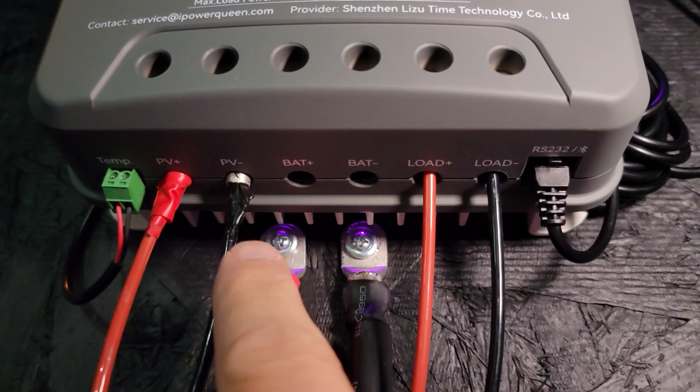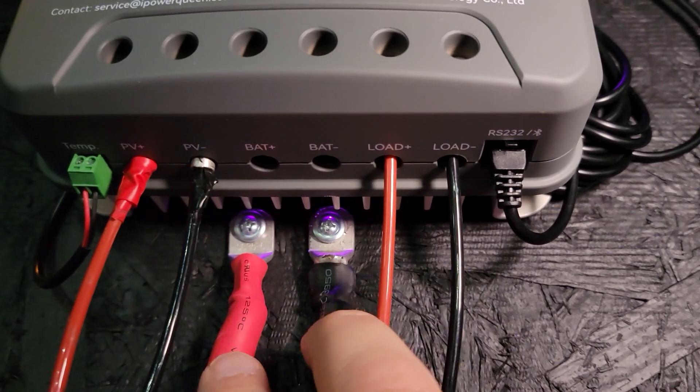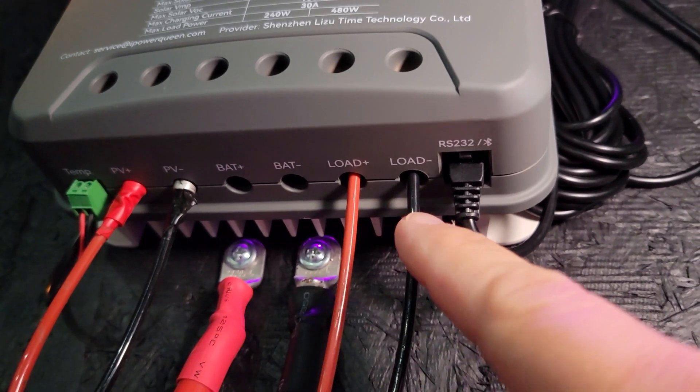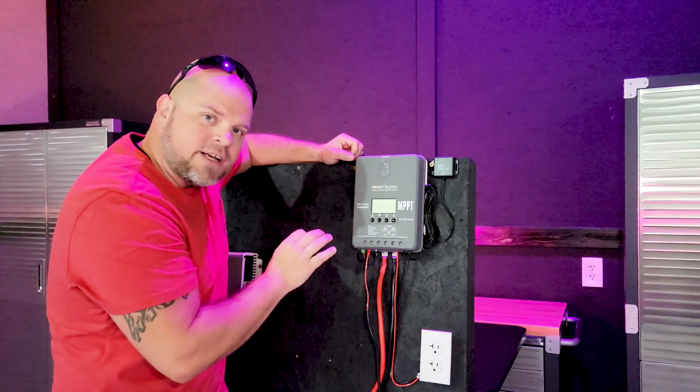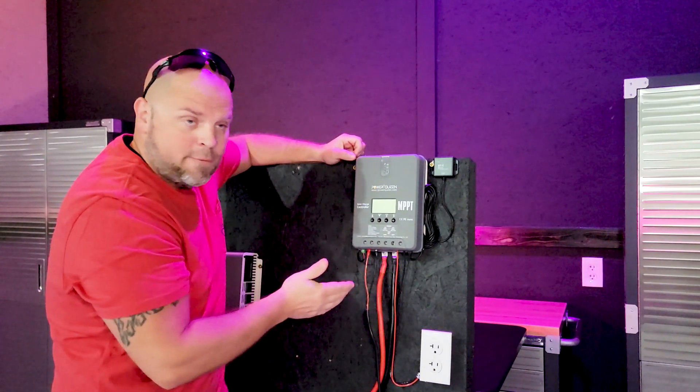Your PV wires that are going to be going out to your solar array. Your battery wires that would go over to your battery, and then the load wires that you see here are actually DC, and then there's the communication wire. And that's a quick overview of how it would be wired. It's a pretty simple process and pretty straightforward.